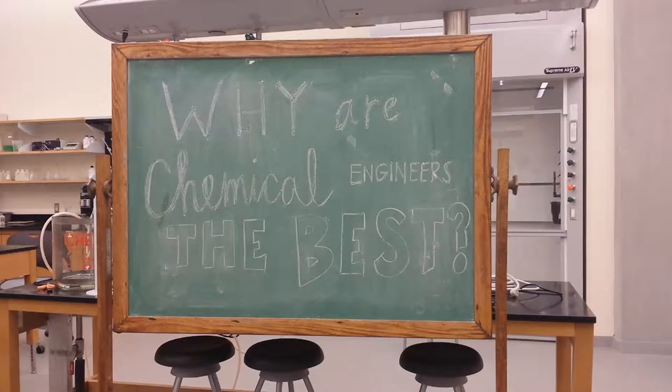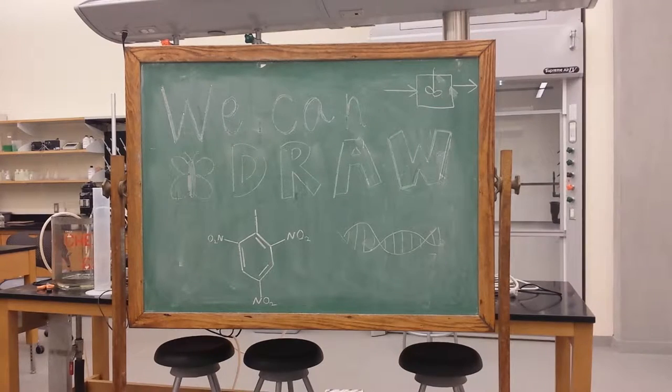This video is here to talk about why we, chemical engineers, are the best. One of our great abilities is that we can draw. Through our extensive coursework in organic chemistry and kinetics, we can draw structures such as TNT and diagrams of the CSTR, plug flow reactors, and batch reactors.